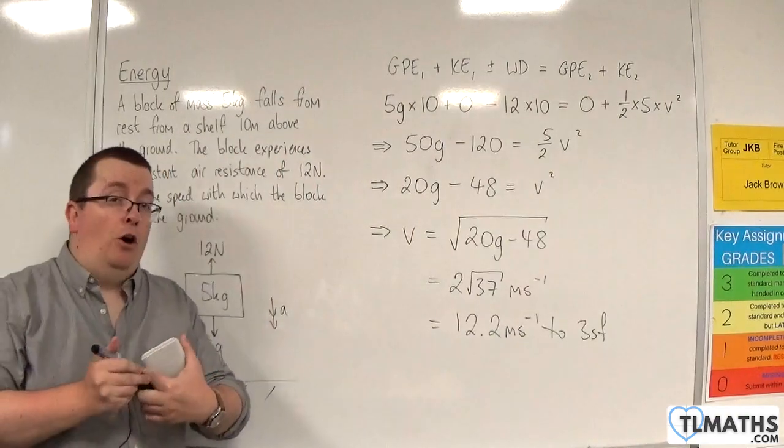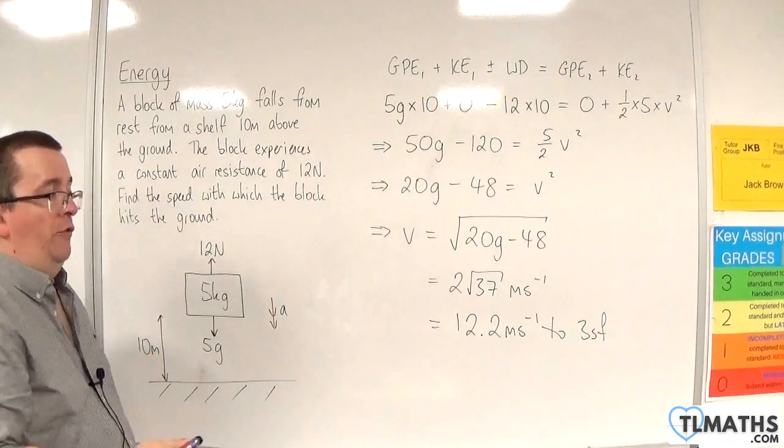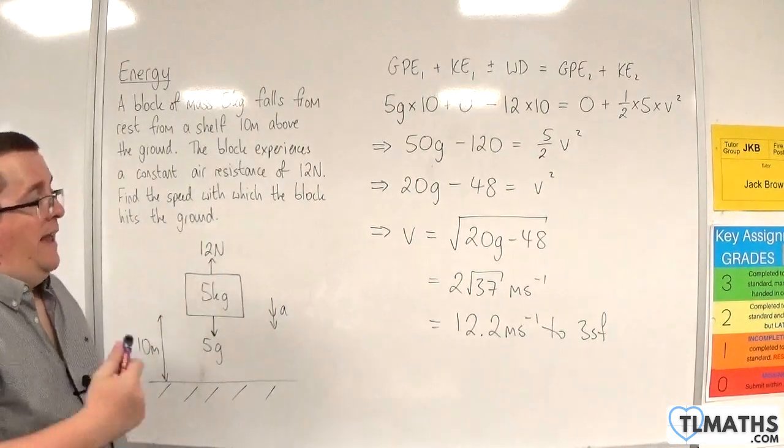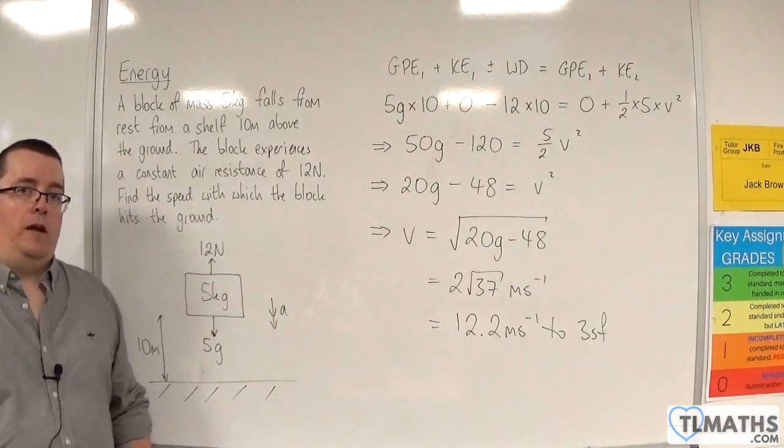Now, the previous answer that we got was 14 meters per second, and there was no air resistance. So you can see that the air resistance would cause the block to be moving slower when it hits the ground.